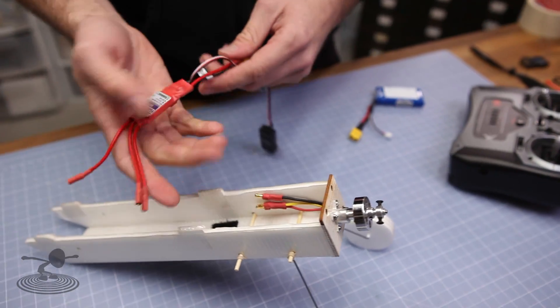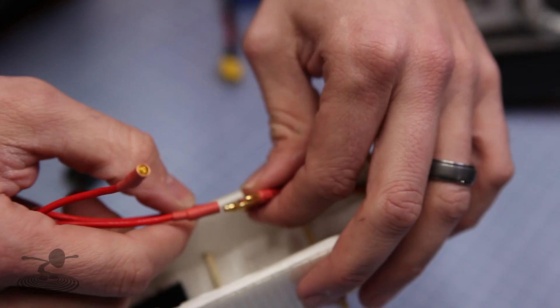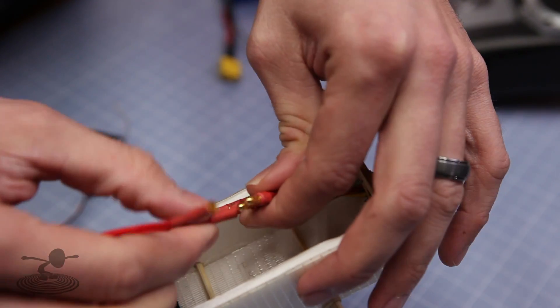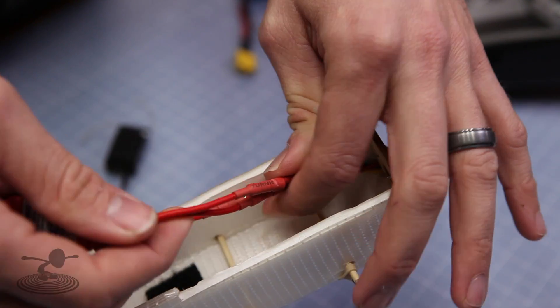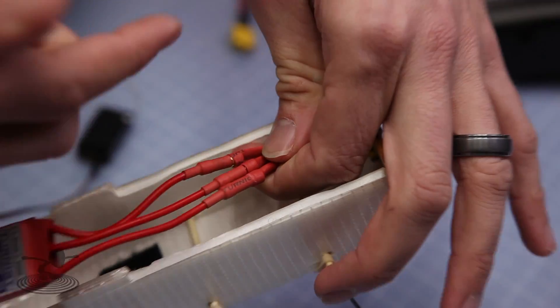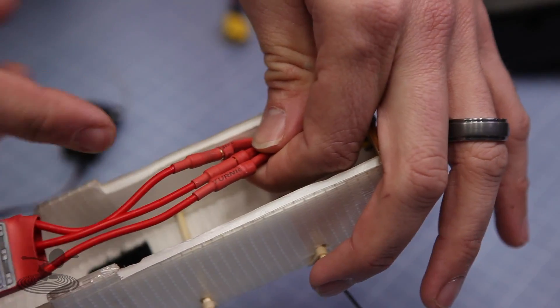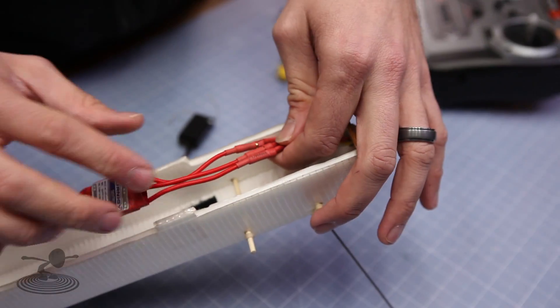Now that we have the receiver talking to our transmitter, the next step is to connect the ESC to our motor here. We're going to simply do this by connecting our ESC leads, the three of them, to our motor leads. Now don't take too much concern about which order you put these in, because if it runs backwards we're simply going to switch two of these leads to make it run the opposite direction.